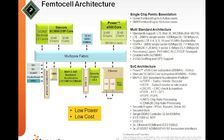Looking at the femtocell hardware architecture: this is a Freescale femtocell architecture for a home base station. It has a DSP running all the baseband, a Power Architecture core running the software stack, Maple accelerators running core signal processing for 3G and 4G technologies, a security engine, backhaul, and RF interface. This is an SOC designed to operate at very low power — less than 5 watts — at low cost.